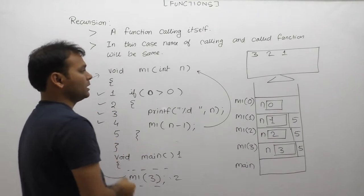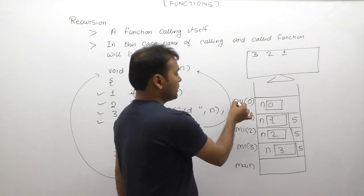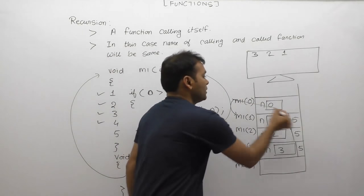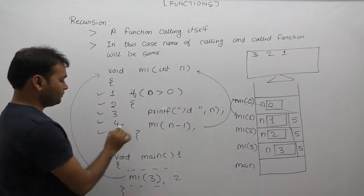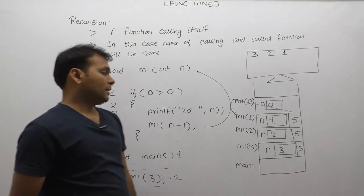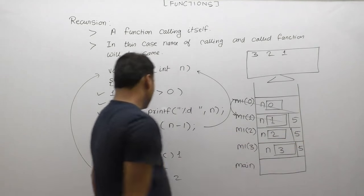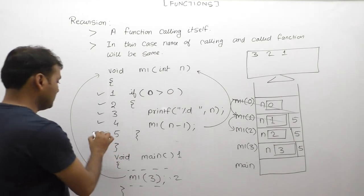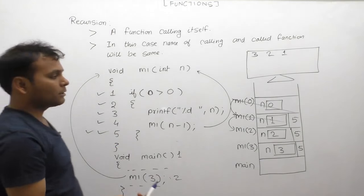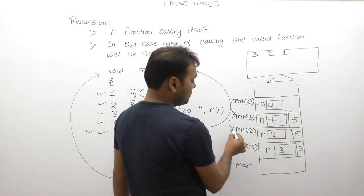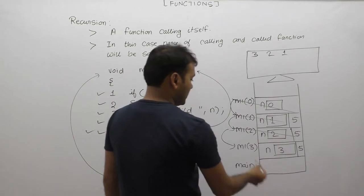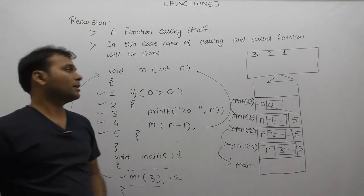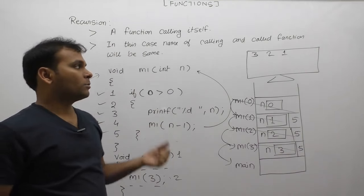When the condition is false, control is sent directly outside the body. After execution completes, control is sent back to the calling place - the 5th case of the previous m1 instance. That instance's execution also completes. Control returns to its previous caller at the 5th case position - but there is no remaining code after that, so execution completes. Control returns up the call chain. The final output of this function is: 3, 2, and 1.